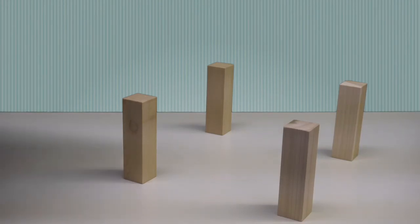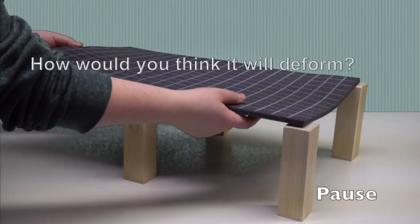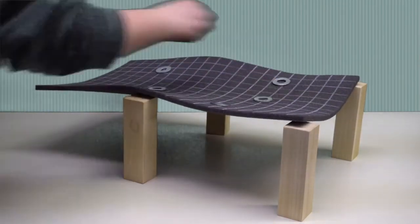Suppose we had a floor with an overhang. How do you think it would deform? Here is what the model shows us.